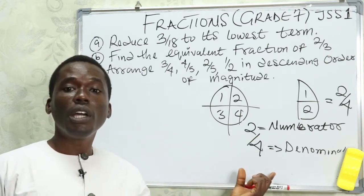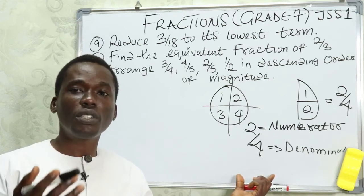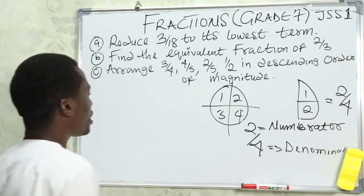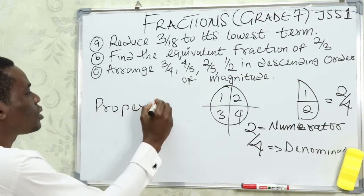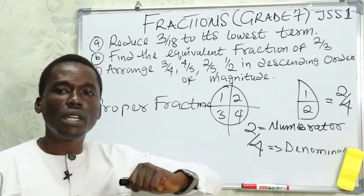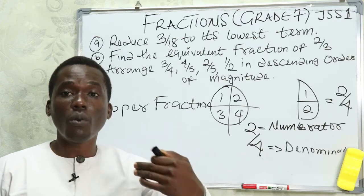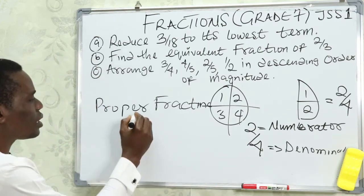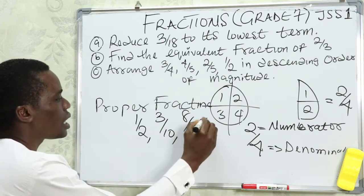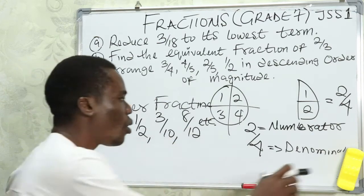Fractions are made up of two types. The first type is the proper fraction. Proper fractions are fractions in which the numerator is less than the denominator. So when you have any fraction where the numerator is less than the denominator, it is a proper fraction. Examples include 1 over 2, 3 over 10, 8 over 12, and so on.